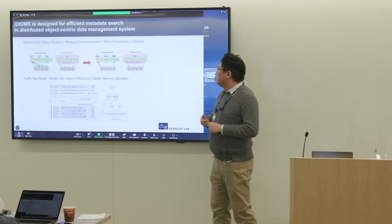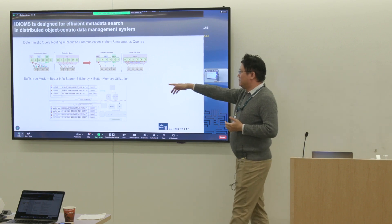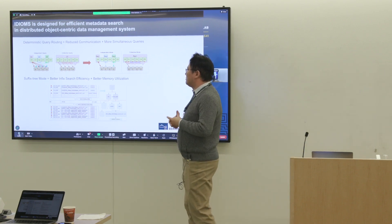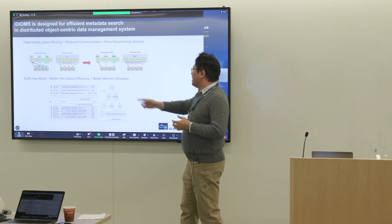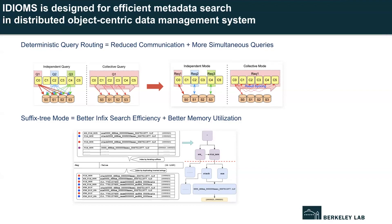The key achievements include minimized query routing in the client runtime library, which reduces communication cost and allows more simultaneous queries within the same time frame. We also achieved a suffix tree mode in the server-side runtime library, bringing better infix search efficiency as well as better memory utilization.